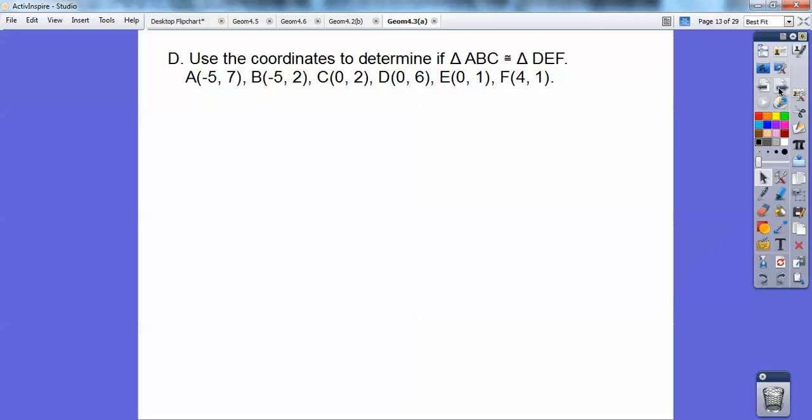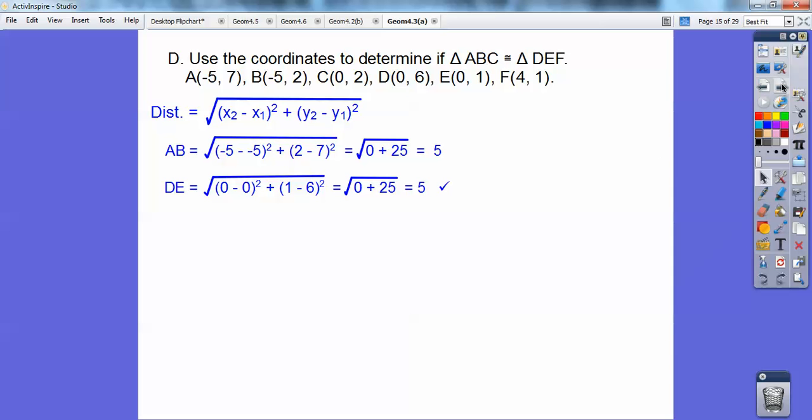So use the coordinates to determine if triangle ABC is congruent to triangle DEF. We're going to see if they're congruent by side-side-side. So here's ABC, DEF, all those ordered pairs. I'm going to use distance formula to figure out if the sides are equal lengths. So let's do AB, we'll use the distance formula, and AB would be first and second letter, so first and second letter would be DE. So I'm going to use distance formula for AB and DE, and it turns out that both of those equal five.